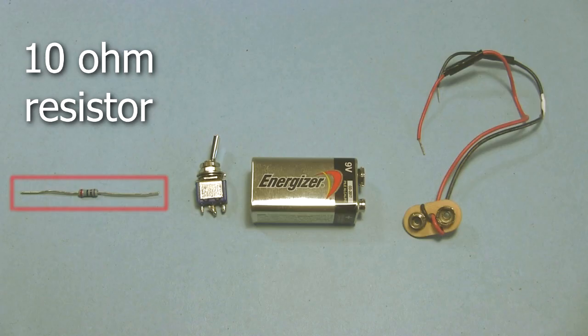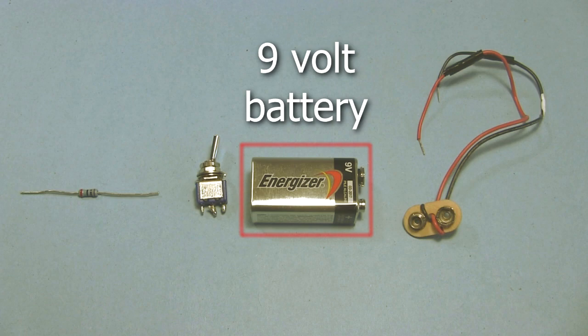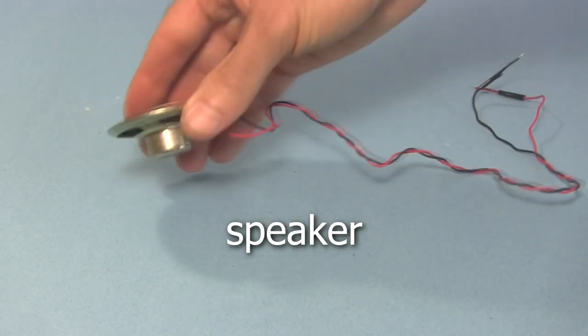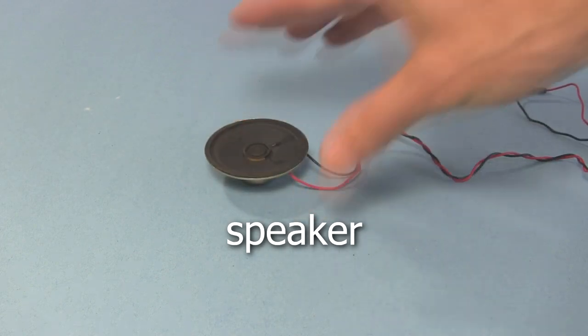You'll also need a 10 ohm resistor, a simple on-off switch, a 9 volt battery and some way of attaching to the battery, a small speaker, usually one that's 8 ohms. This is a permanent magnet type of speaker, which I took from a toy electric guitar.